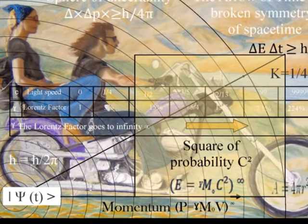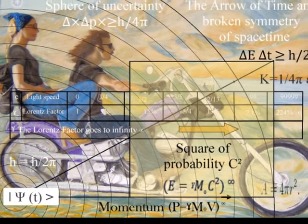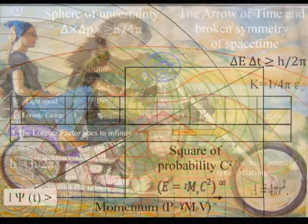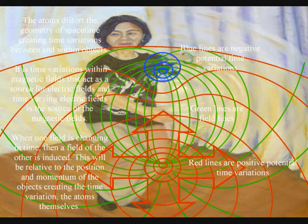The right angles in the mathematics of Hugh Everett represent the magnetic fields always being at right angles to the electric fields, forming electrical potential within each reference frame.